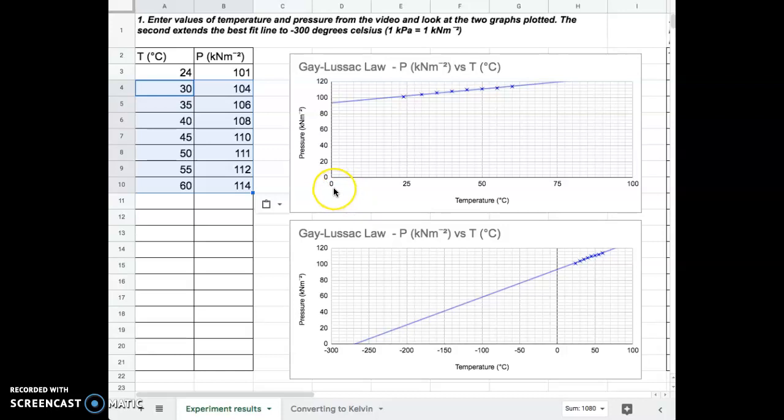That's because the temperature scale we're using is from zero, melting point of ice, up to 100 degrees Celsius, which is the boiling point of water.